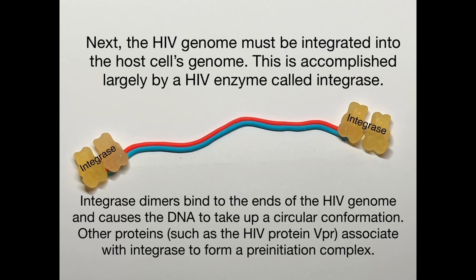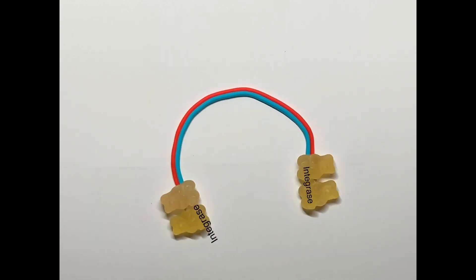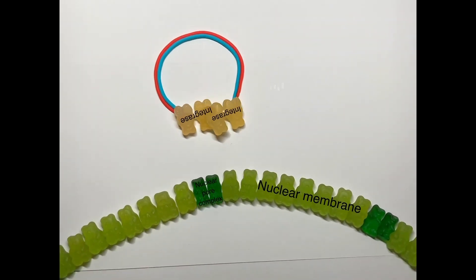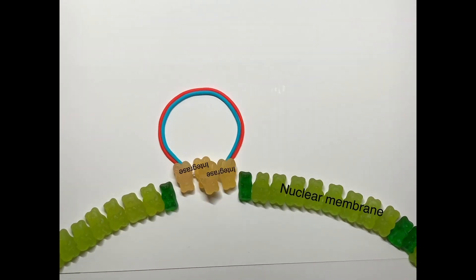The HIV genome must now be integrated into the host cell's genome, accomplished largely by the HIV enzyme integrase. Integrase dimers bind to the ends of the HIV genome, causing the DNA to take up a circular conformation. Other proteins, such as the HIV protein VPR, associate with integrase to form a pre-initiation complex, which then enters the nucleus via a nuclear pore complex.